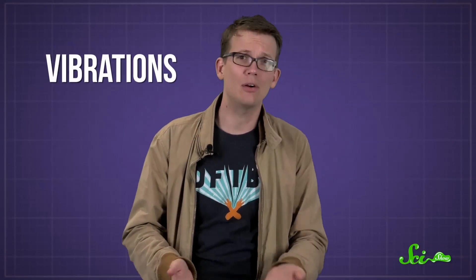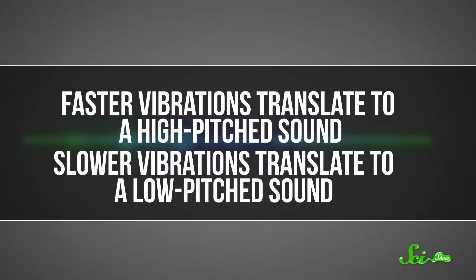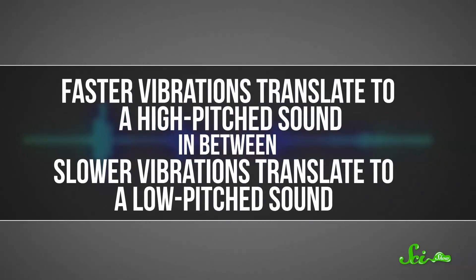Let's start with sounds, which are just vibrations in the air around us that get picked up by our ears. Faster vibrations translate to a higher-pitched sound, slower vibrations translate to a low-pitched sound, and everything in between. So to get a certain sound, all you need is air vibrating at the right rate. These vibrations are usually measured in units of hertz, or the number of movements back and forth per second.